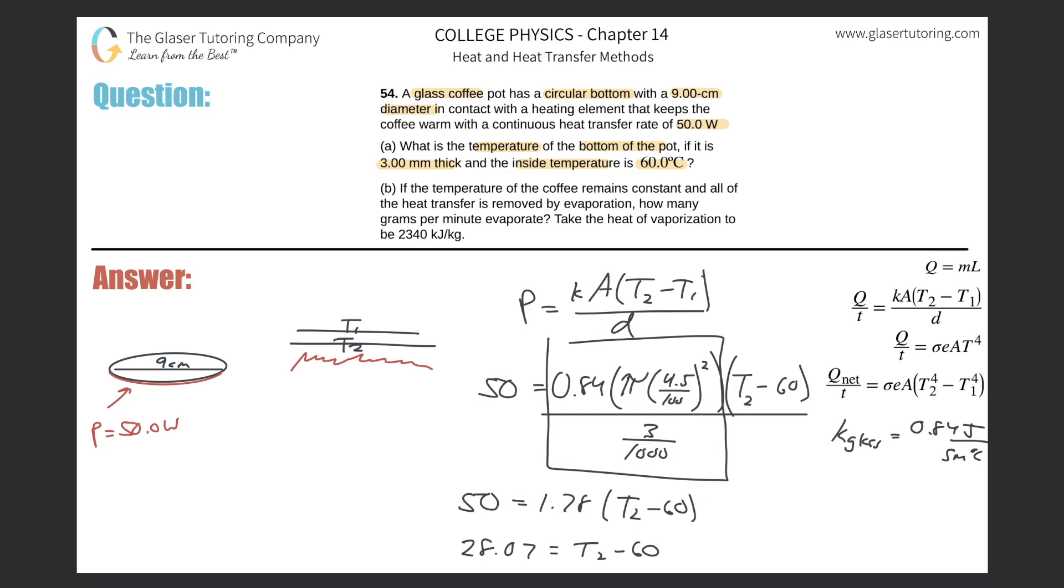Add the 60 on over to the right-hand side. And what do you get? So the T2, the other temperature, the temperature by the heating element should be about 88.1 degrees Celsius. And that's it. So that takes care of that, and then that was part A here.